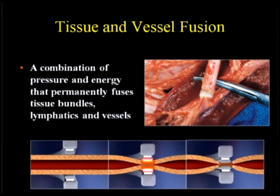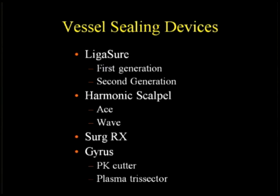Of late, there's been a further development in controlled bipolar, which is vessel sealing devices. These use the principles of bipolar technology with some sort of current and energy control in addition to pressure. There are a number of vessel sealing devices, and I'm sure everybody is familiar with all of them — we've seen plenty of examples throughout the past day and a half. These include the LigaSure, the harmonic scalpel — which is not technically an electrosurgical device — the SurgeRX EnSeal, and the Gyrus.